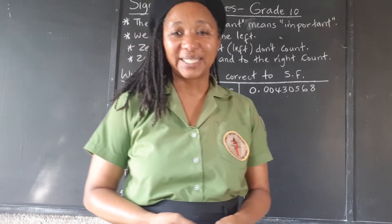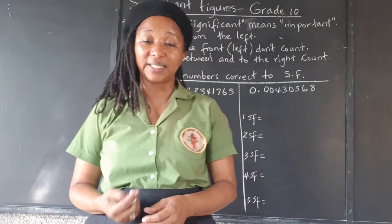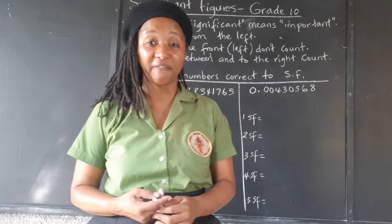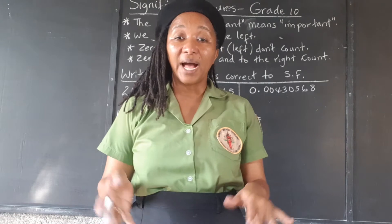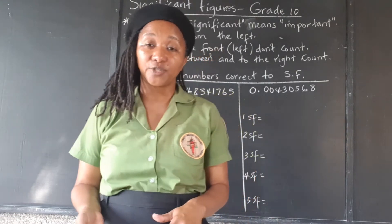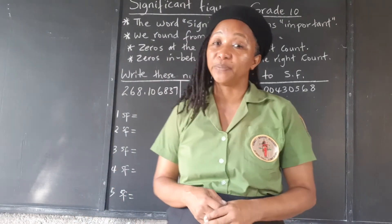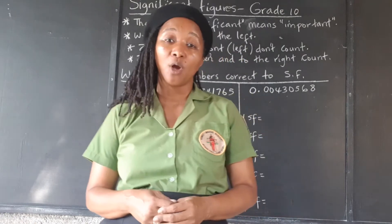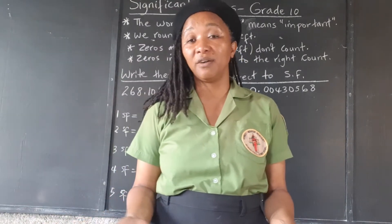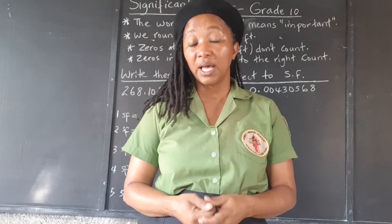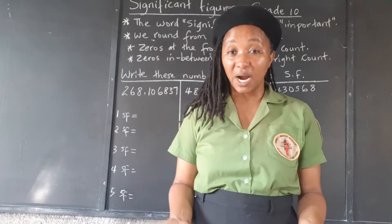Hello scholars, welcome back to the channel. What we're doing today is we're looking at significant figures. What do we mean when we're told to leave your answer correct to a number of significant figures? We need to know because many times we are told to round the answer off to a number of significant figures, and if you don't do that, you're going to be losing marks.